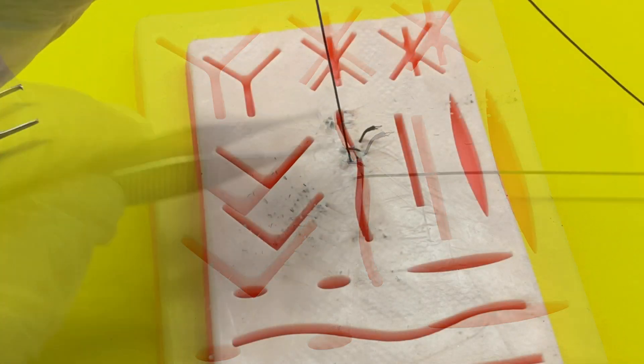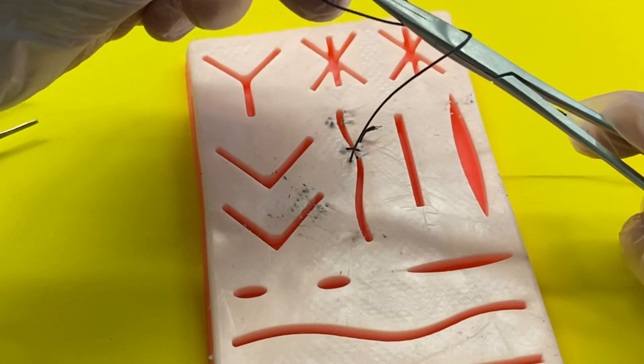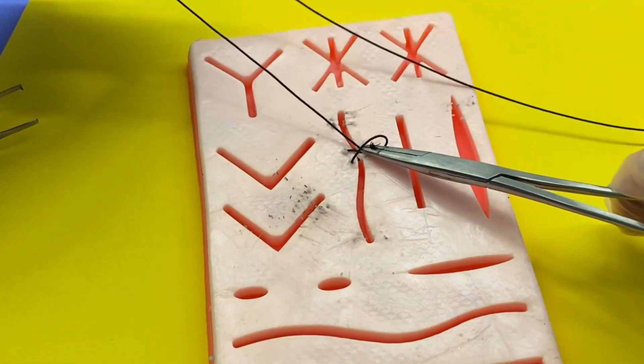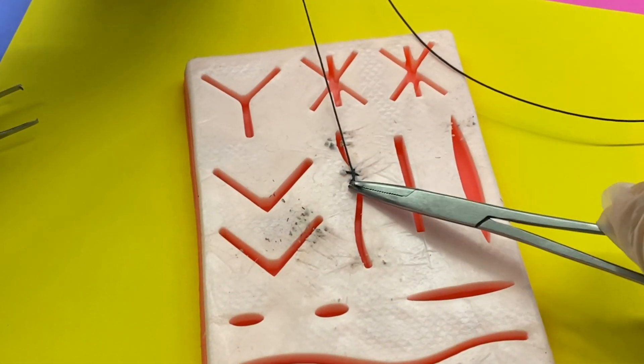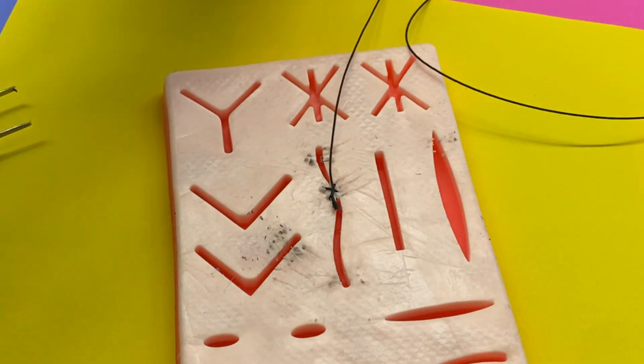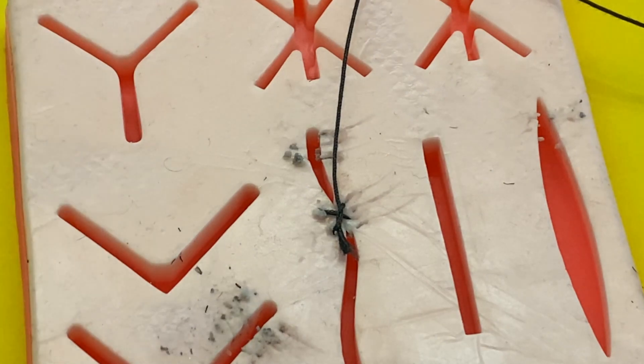After the thread is all the way down, you're going to now make two loops. One, two, and grab the end of the thread and pull through. Tighten it by moving your arm to the right and pulling. And when you look at it close up, it's supposed to look like an eight, even though it looks more like a T or an X.